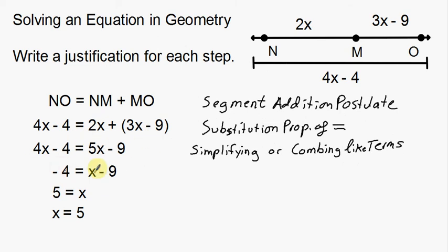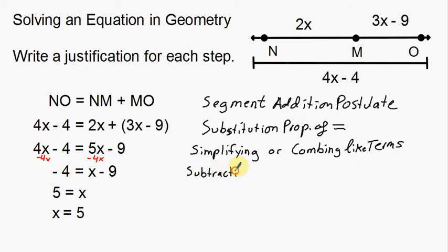Line 3 to line 4: let's see what's absent. The 4x on the right is no longer there, and 5x became x on the left. It looks like we took the 4x and subtracted it over to the other side, subtracting from both sides. That gives us the justification of the subtraction property of equality.